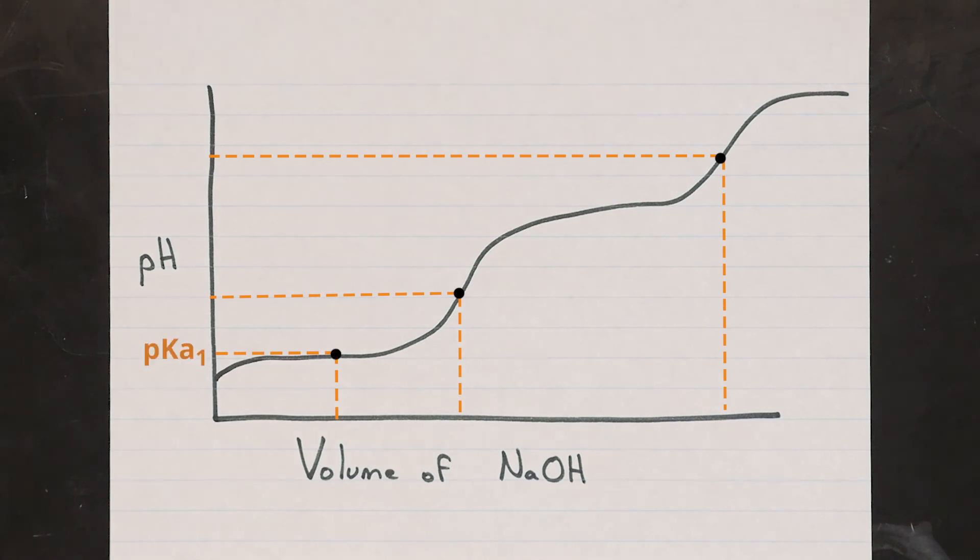To get the second pKa, all you need to do is add the same amount of volume from the half neutralization point to the volume at the first equivalence point. Then, just trace up to your curve again, and then to the side, to determine your second pKa.